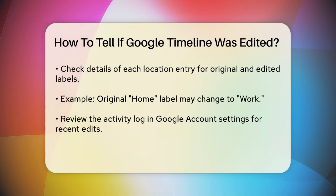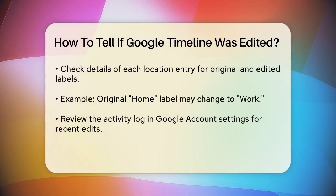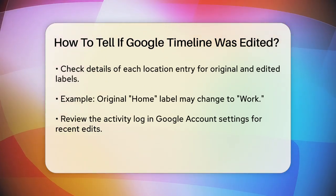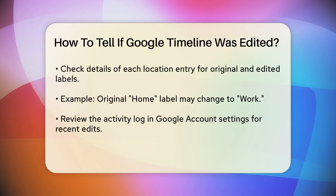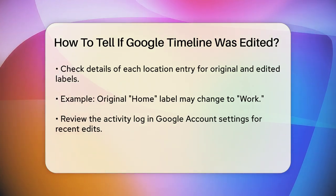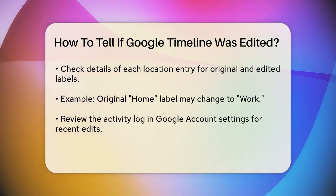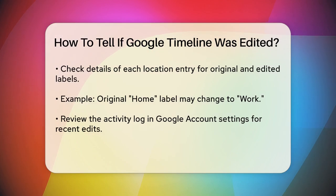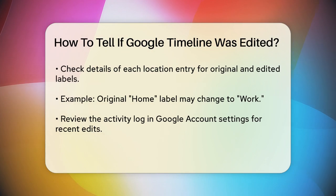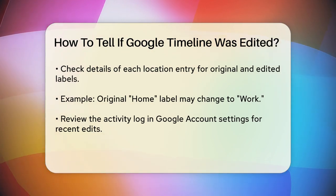Once you're in the timeline, you can see a map view of your locations for each day. If someone or you have made edits, there are a few things to look out for. One key indicator is the presence of edited labels on specific entries. When you or someone else edits a location, Google will mark it as edited next to the entry.